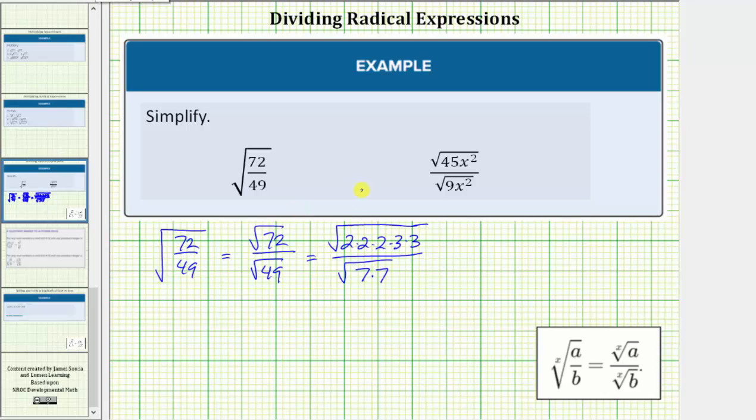And now I'll circle the perfect square factors. Two times two is a perfect square, and so is three times three. In the denominator, so is seven times seven.